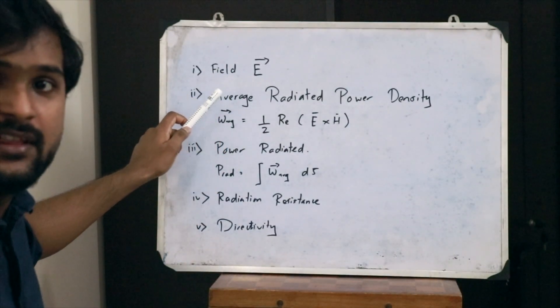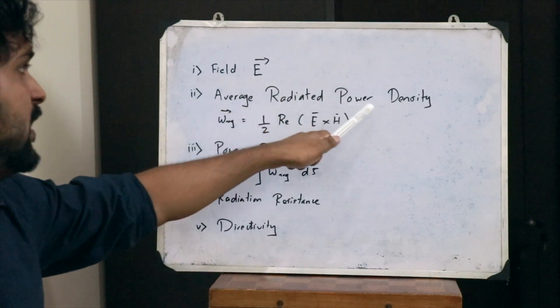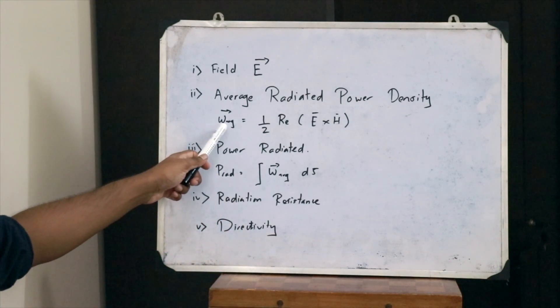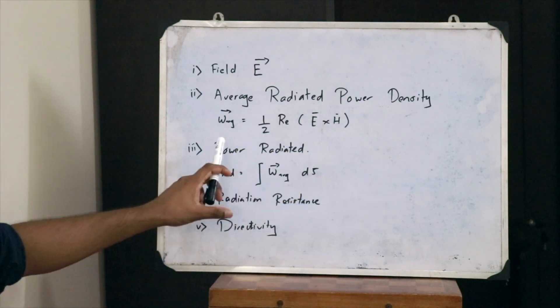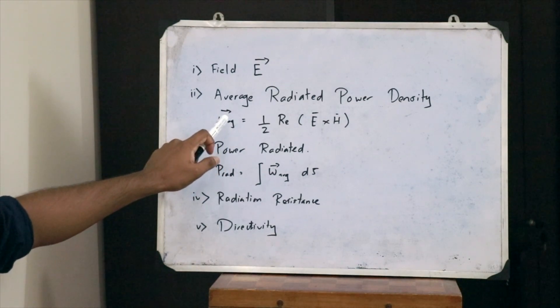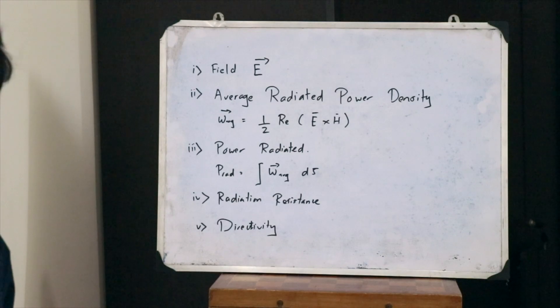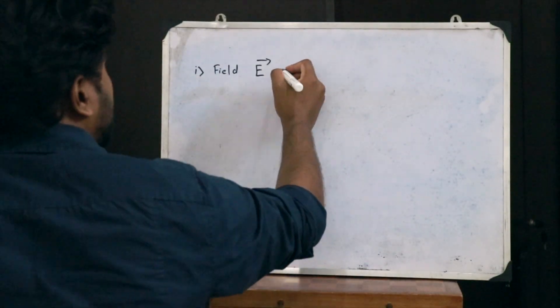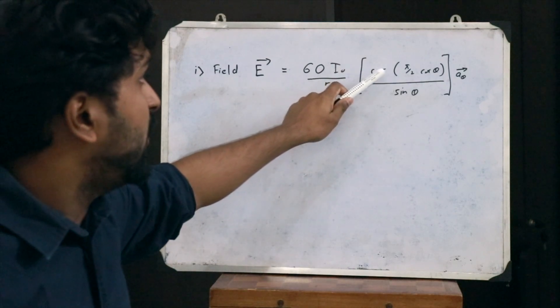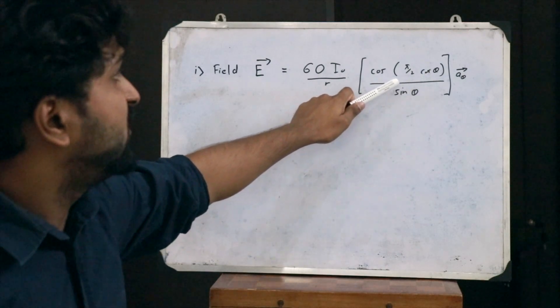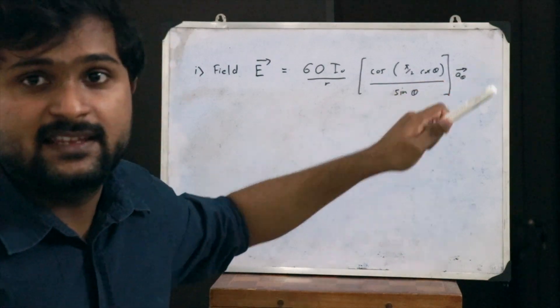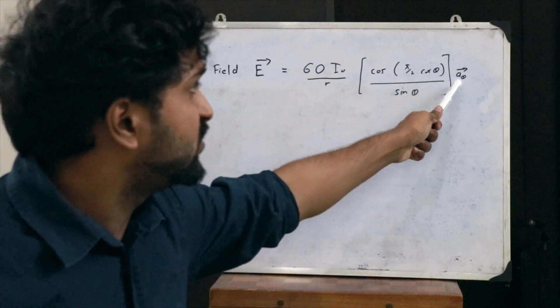Now let's have a quick look at the topics we will be discussing today. First, the electric field generated by a half-wave dipole antenna. Then the average radiated power density, which is obtained using W_average = (1/2) Re(E × H). The power radiated is the surface integral of this average radiated power density. The electric field produced by a half-wave dipole antenna is given by E = (60·I₀/R) · [cos(π/2 · cosθ) / sinθ] in the direction of a_theta.